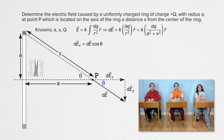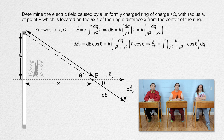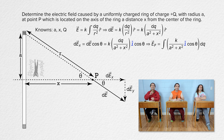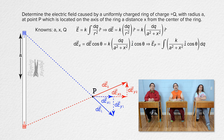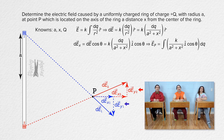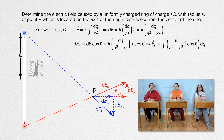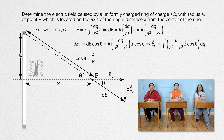We substitute the equation for dE into the expression for dE in the x direction and integrate both sides. The total electric field at point P equals the integral of the Coulomb constant over a squared plus x squared, times unit vector r, times cosine theta, with respect to charge. Since the electric field is directed to the right, we replace unit vector r with unit vector i. Also, if point P were not along the axis, the fields in the y direction would not cancel, making it much harder to calculate. Using cosine theta equals adjacent over hypotenuse, we also get cosine theta equals x over r.